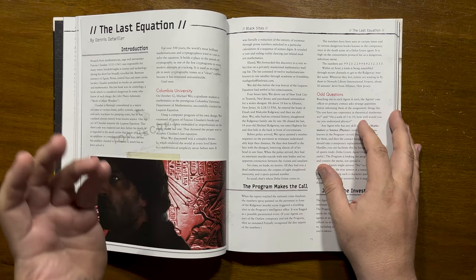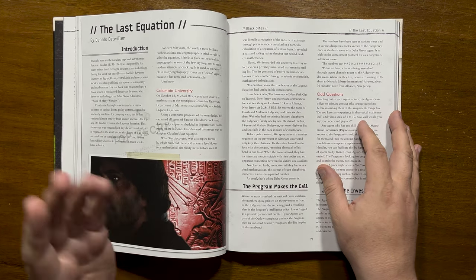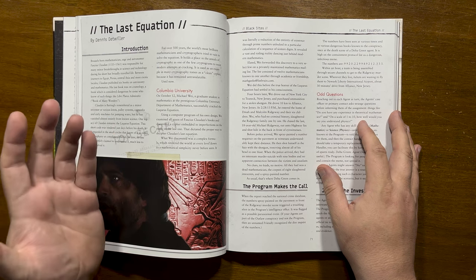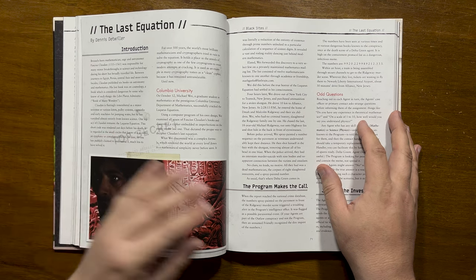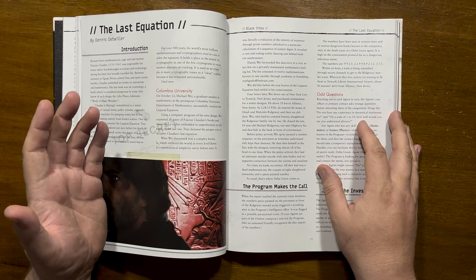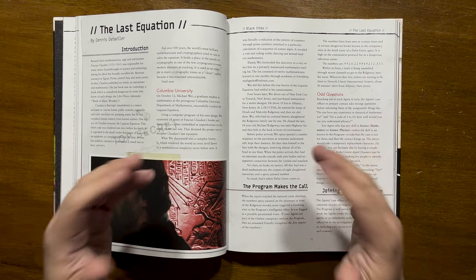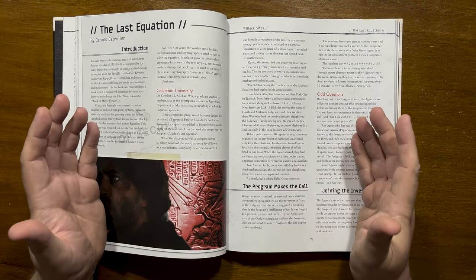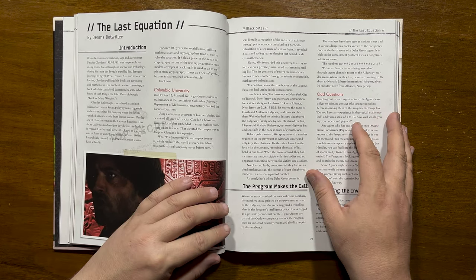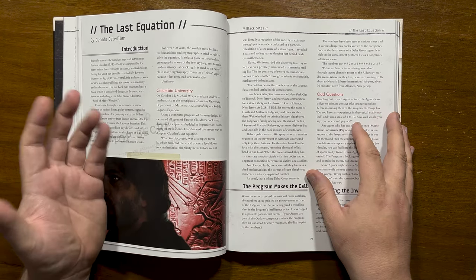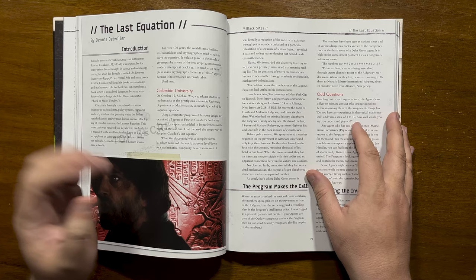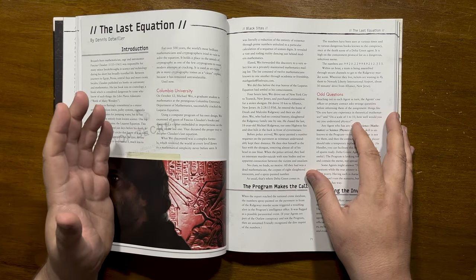Four hours later he drove to Teaneck, New Jersey, purchased ammo for a stolen shotgun, then entered the home of Dina and Malcolm Ridgeway and murdered them with their six children, killing the last of them out on the street in front of witnesses. Before police arrived he spray-painted a sequence of numbers on the pavement then shot himself in the face. There are no clues, no motive and no connection between the Ridgeways and Wei. This is where Delta Green entered the equation.